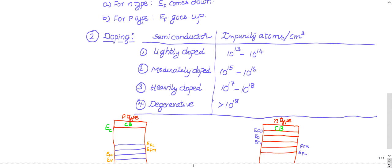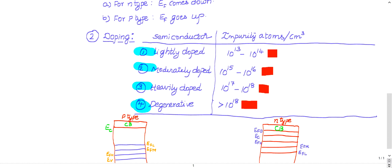Doping levels are also important. Doping can be lightly doped, moderately doped, heavily doped, or degenerately doped. Lightly doped means adding 10^13 to 10^14 impurity atoms per cm³ of intrinsic material. Moderately doped is 10^15 to 10^16. Heavily doped is 10^17 to 10^18 atoms per cm³ of pure semiconductor. Degenerately doped means adding more than 10^18 atoms.